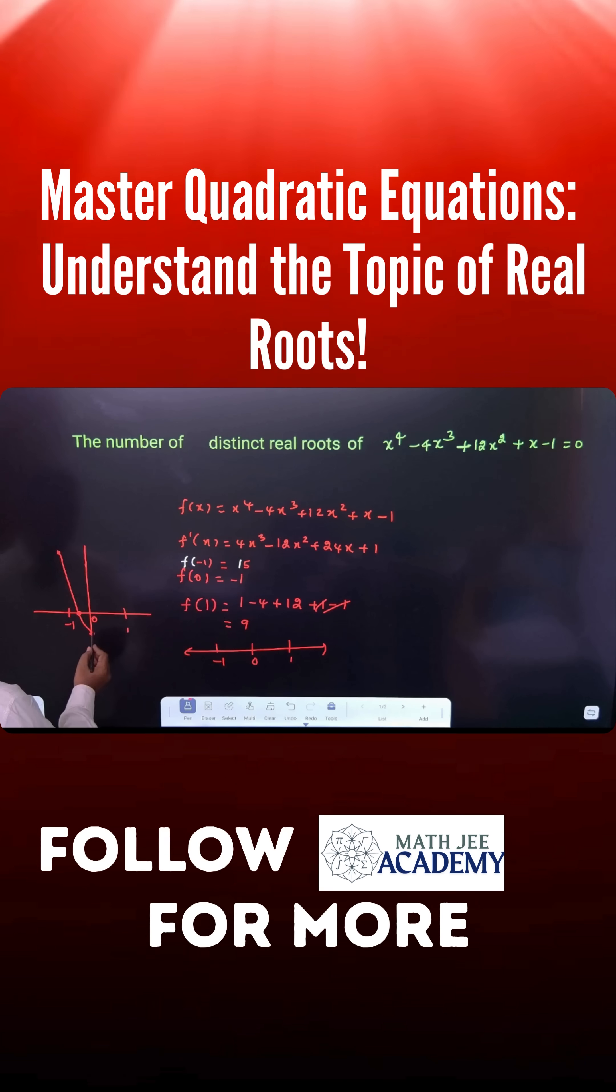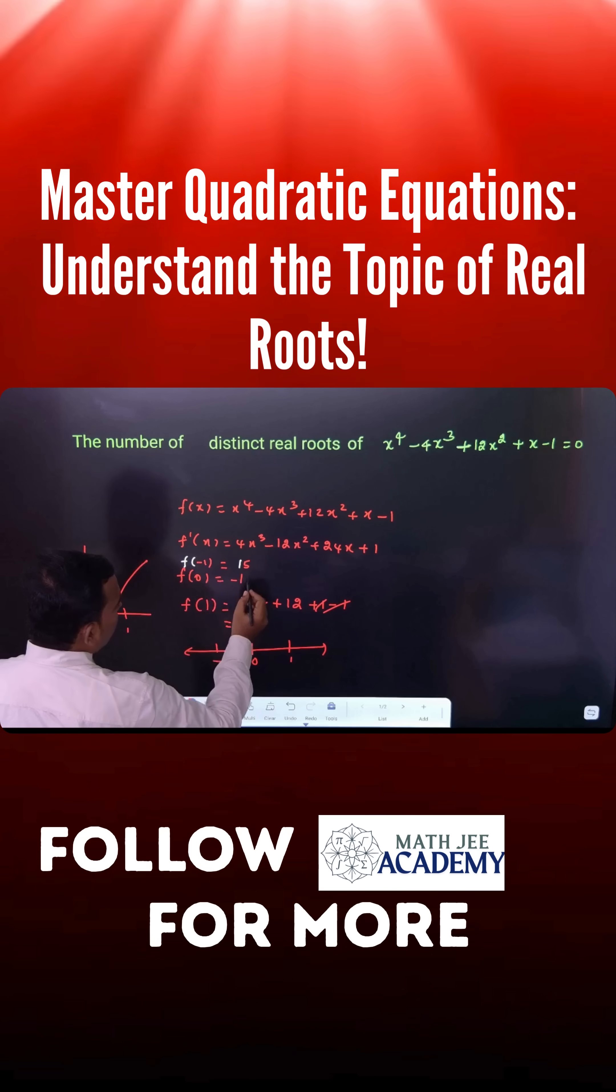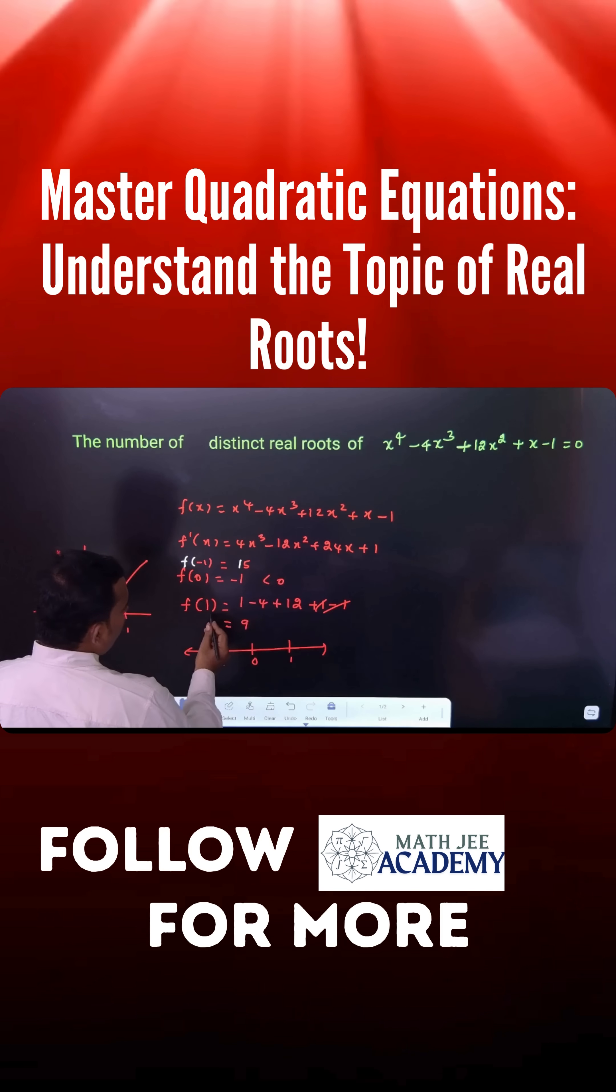But the same way, if you take 0 to 1, it also crosses because from 0 to 1, the value at 0 is less than 0, and if you put 1, it is greater than 0.